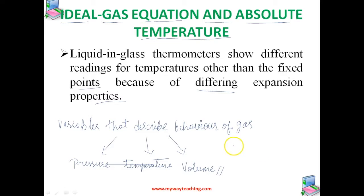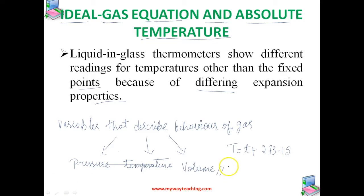The relationship between temperature scales is given by T = Tc + 273.15, where T is the temperature in Kelvin and Tc is the temperature in degree Celsius.